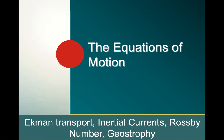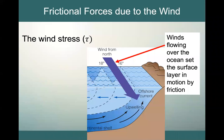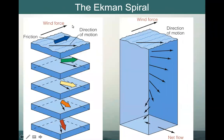Let's start by looking again at how we get Ekman transport. When we have winds blowing along the ocean, we get a wind stress due to the frictional forces between the air and the water. The winds flowing over the sea set that top layer in motion. But the winds are going in one direction, and while the motion starts in the direction of the wind force, we have Coriolis because we are on a rotating earth. So the direction of motion of the water is not the same as the wind, but is in fact offset to the right.